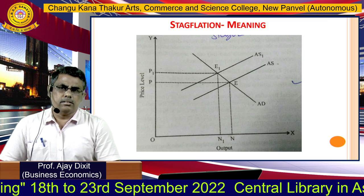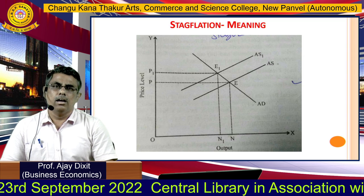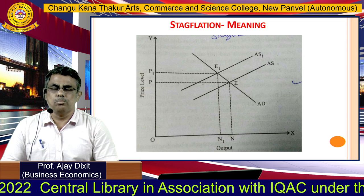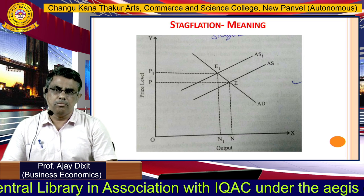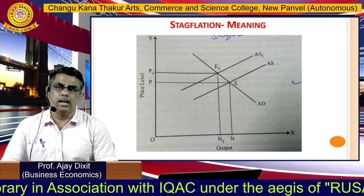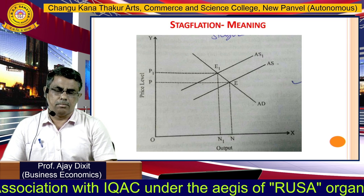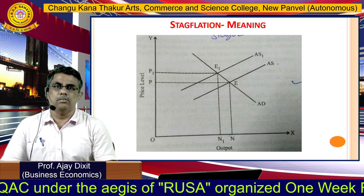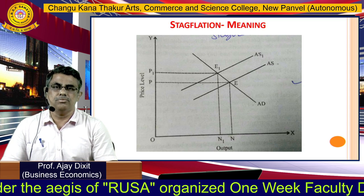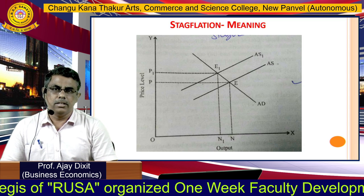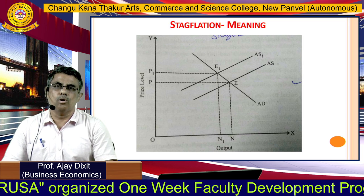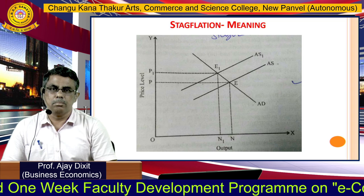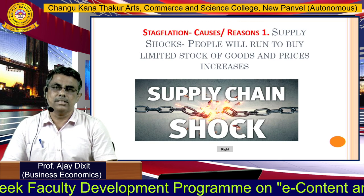Unemployment also increases — this is the economic interpretation of stagflation. We have the aggregate supply and aggregate demand curves. At point E, we have equilibrium at output N and price level P. In stagflation, the aggregate supply curve shifts to the left, giving us a new equilibrium point E1 where we face a higher price level and lower output.